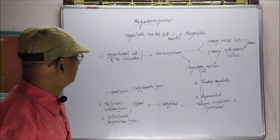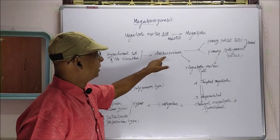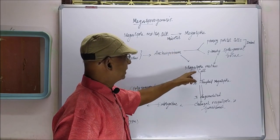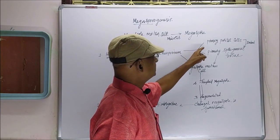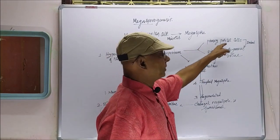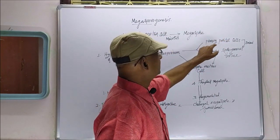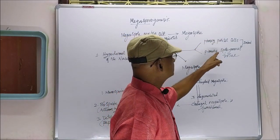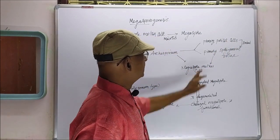First step: in the nucellus, the hypodermal cells will differentiate into the Archesporium cell. In some plants, the Archesporium gives rise to the megaspore mother cell directly. But in other plants, the Archesporium divides and gives rise to primary parietal cells and primary sporogenous cells. The primary parietal cells in some plants undergo periclinal and anticlinal division and surround the primary sporogenous tissue, embedding it.